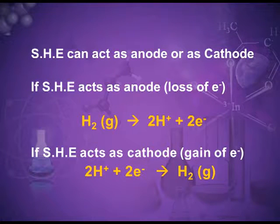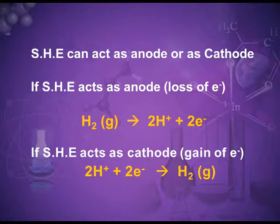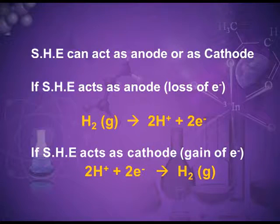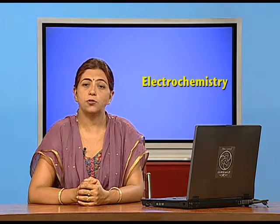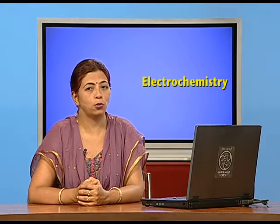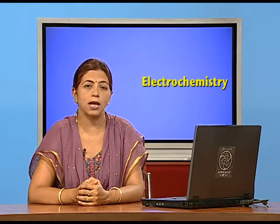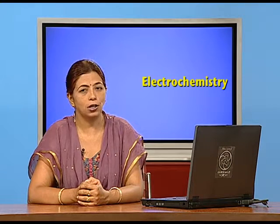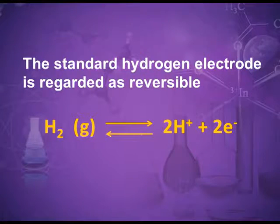As anode, hydrogen gas loses two electrons and is oxidized to hydrogen ions. When acting as cathode, hydrogen ions in the electrolyte accept or gain two electrons and are reduced to hydrogen gas. So it is clear that SHE can act as both anode and cathode — that is why we call it a reversible hydrogen electrode. The reaction shows the conversion of the elemental state into the ionic state and the reverse reaction.